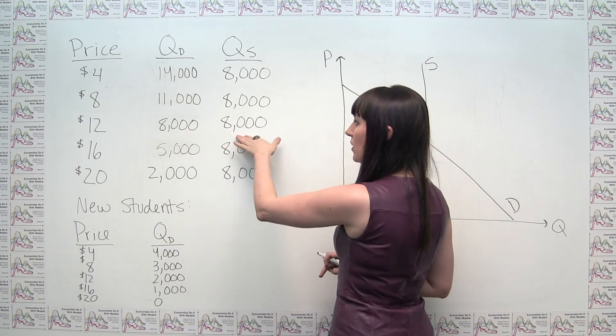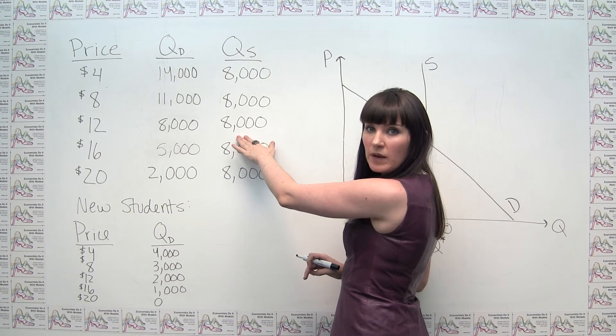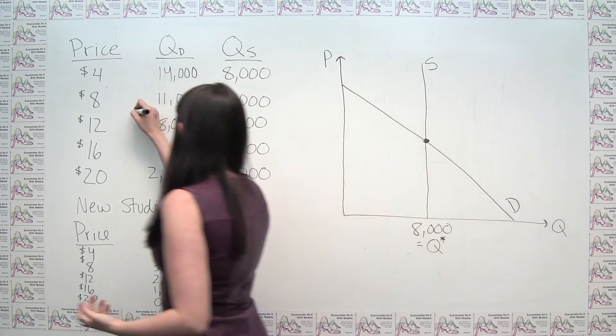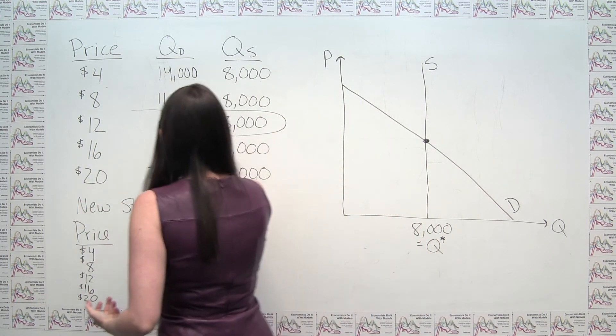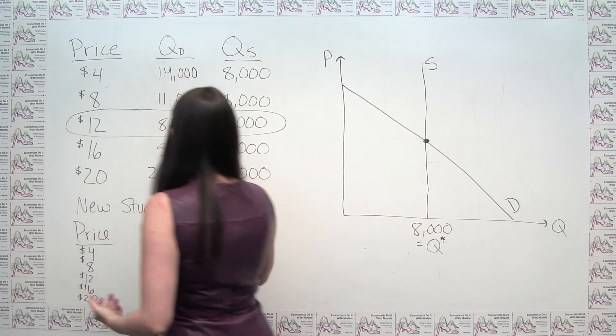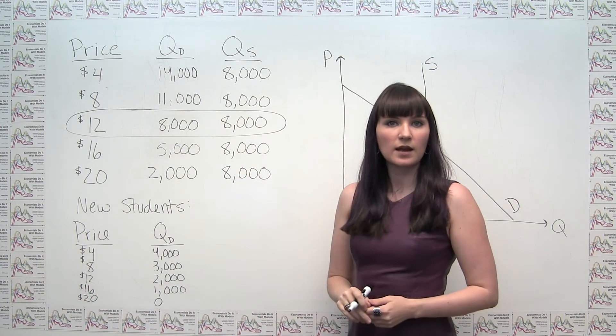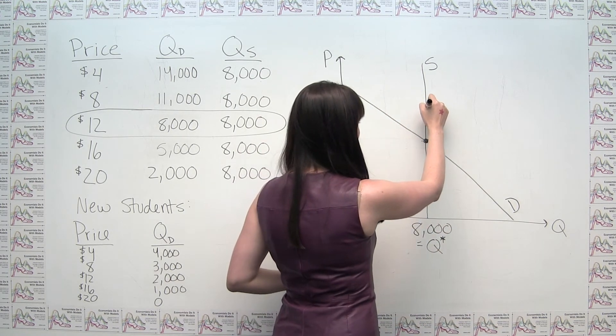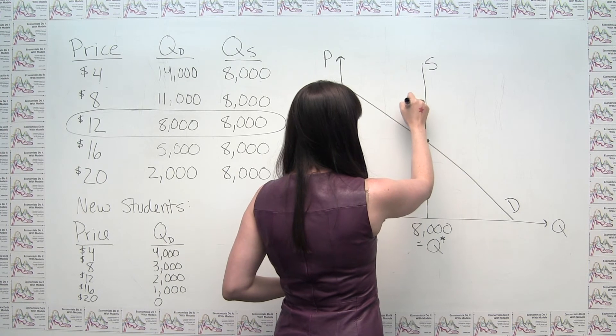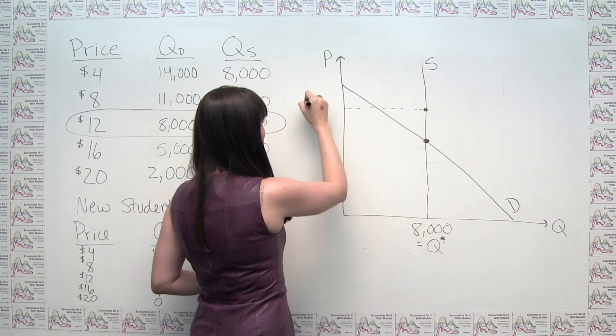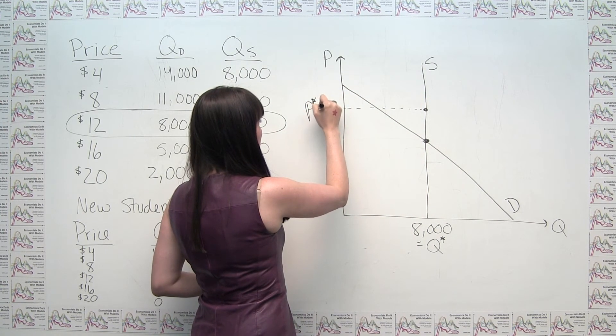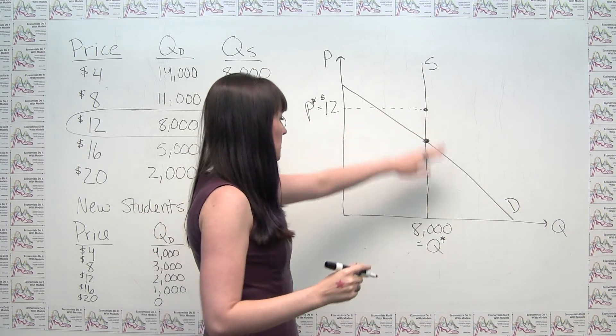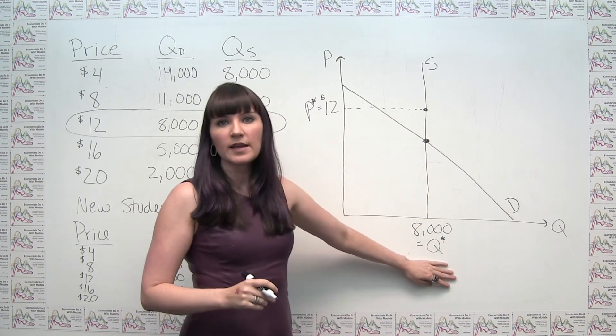So I go along here, and I see, oh look, and now at a price of $12, my quantity demanded and quantity supplied are both 8,000. So I can see now that my new equilibrium price is $12. And that would be something that $12 would be about up here. So we can say that our equilibrium price is $12 and our equilibrium quantity is 8,000.